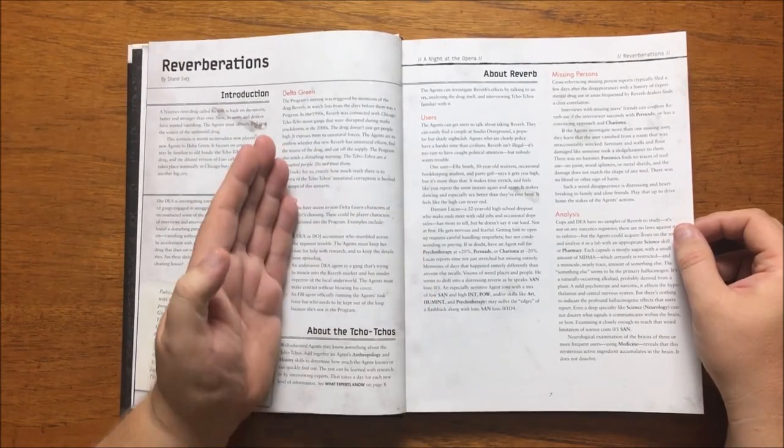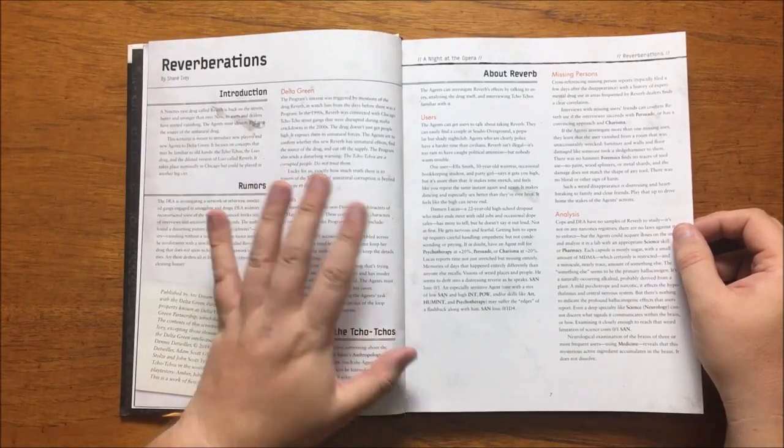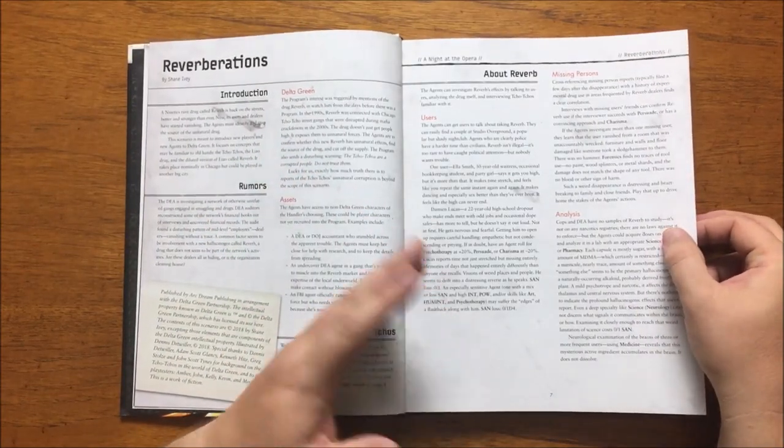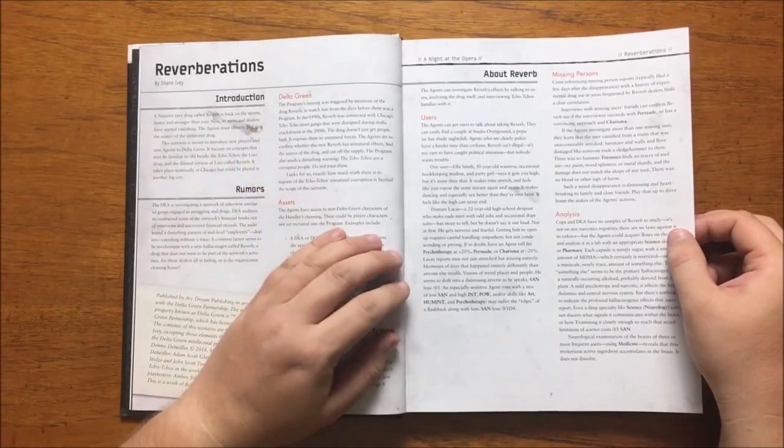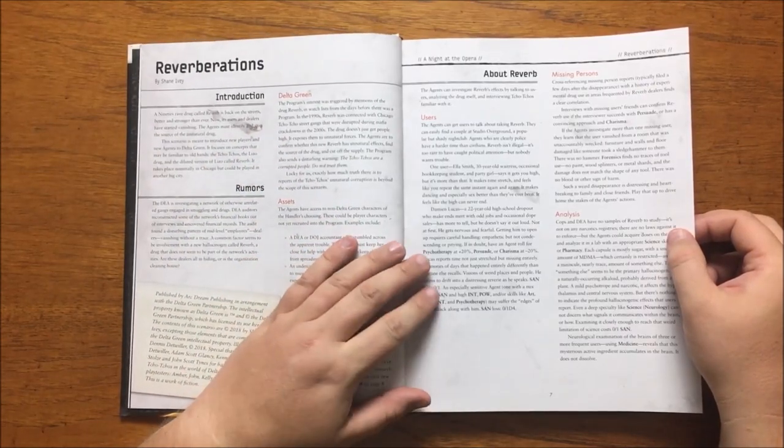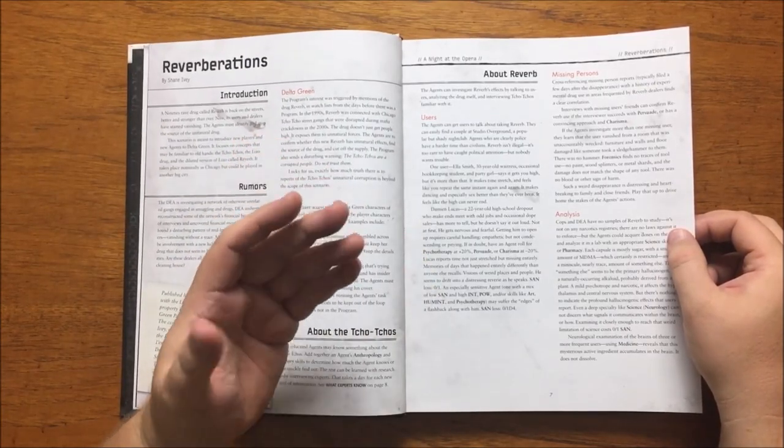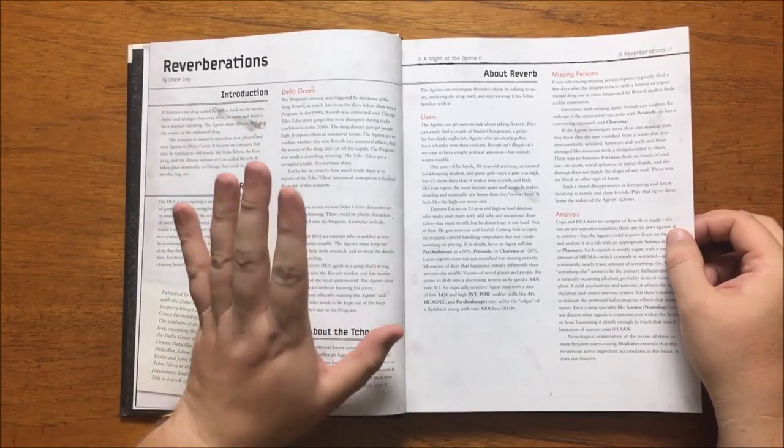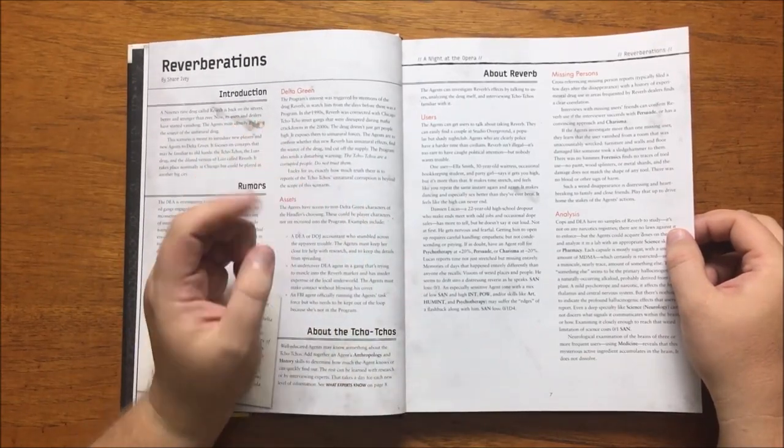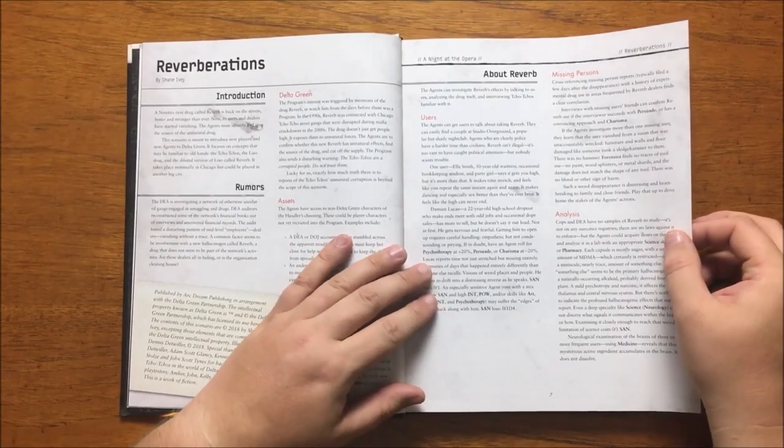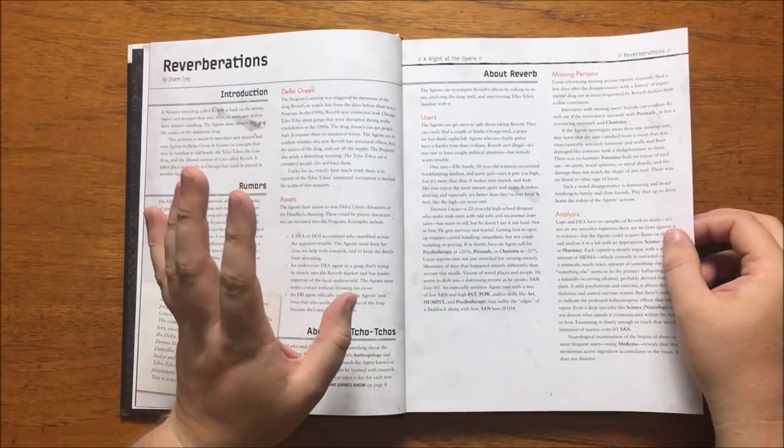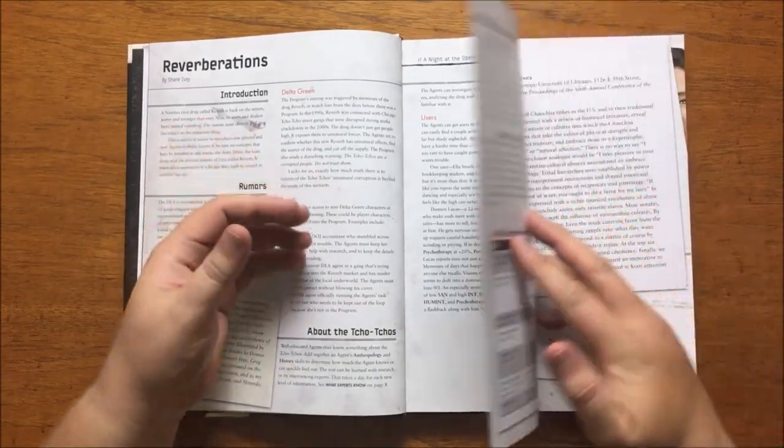Currently, Reverb isn't illegal, and if the agent managed to obtain some of it, they can run through lab analysis with the right skills. They find that it is mostly sugar, with a small amount of MDMA and a trace of something unknown. It can be identified as possibly being a plant-based alkaloid that's a psychotrope that affects the hypothalamus. Also, examination of the brains of three or more users notices that the substance accumulates in the brain and does not dissolve.